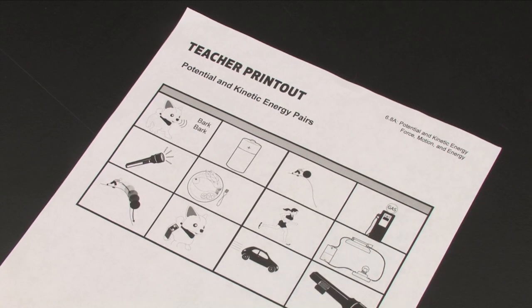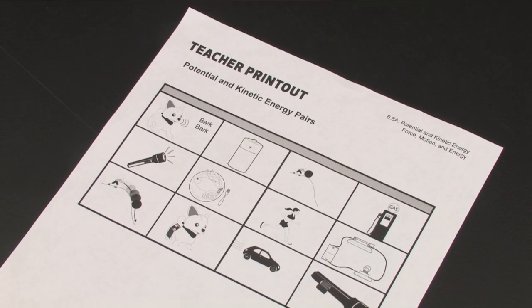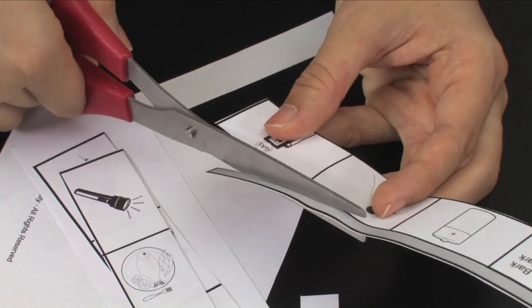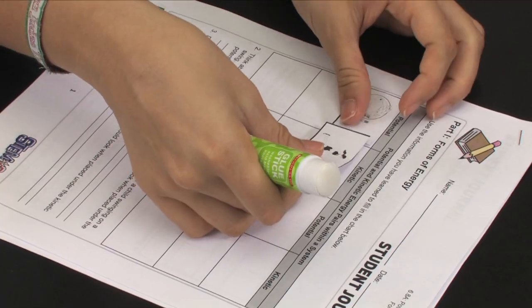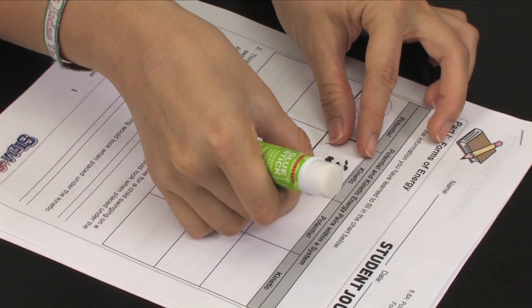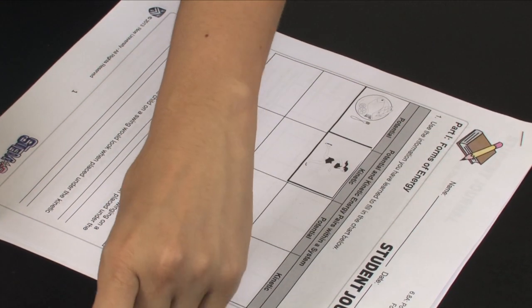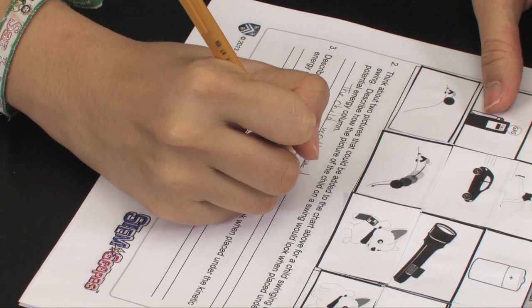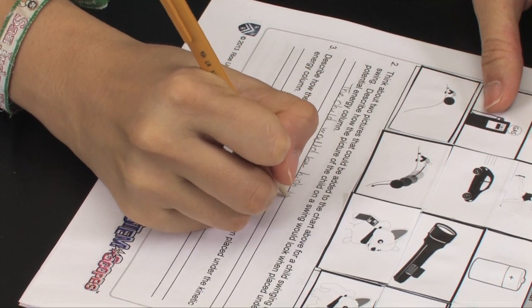Distribute the teacher printout potential and kinetic energy pairs to each student. Students will cut the set of cards apart and paste them into the chart titled Potential and Kinetic Energy Pairs Within a System. Students will then answer the questions in part one of the student journal.